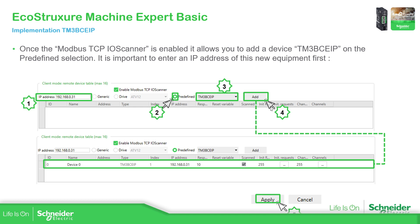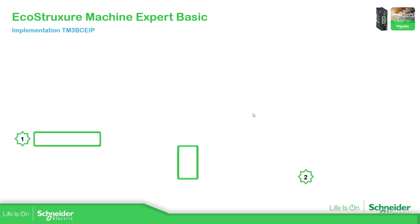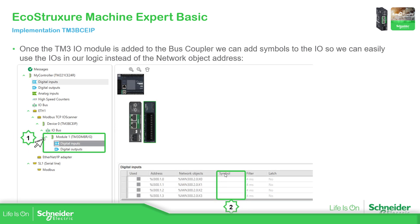Once we add the device, we should be able to see all its information. What we need to do is drag and drop from the list of devices — the TM3 IOs — into the bus coupler in order to add them. Then you should be able to see the field for the symbol. You can use this symbol in your program instead of using the address — that's the main goal, so you have everything together.